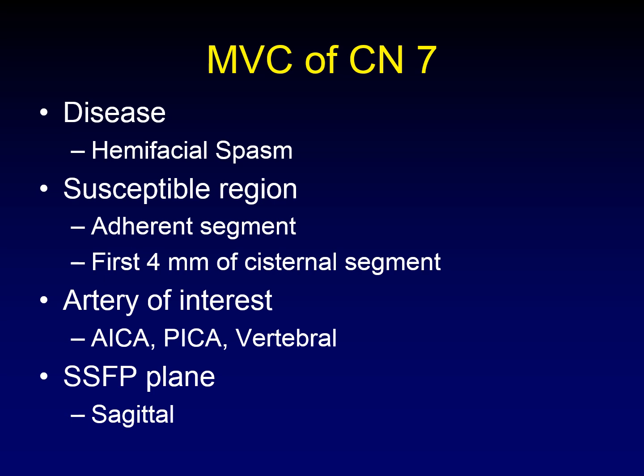A number of different arteries can affect the facial nerve. Most commonly it's the anterior inferior cerebellar artery, but sometimes the PICA can come up and be a problem, and sometimes the vertebral artery is so tortuous that it can affect the seventh cranial nerve. The best plane of imaging is steady-state free precession in the sagittal plane, because that is a cross-section of the seventh cranial nerve.